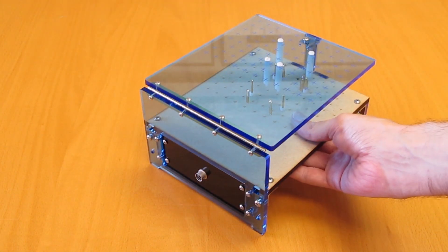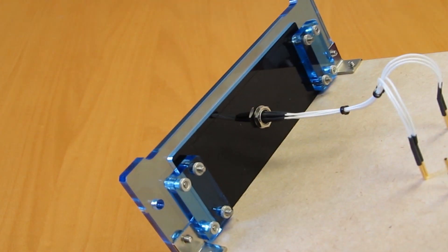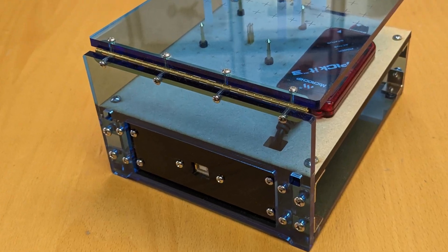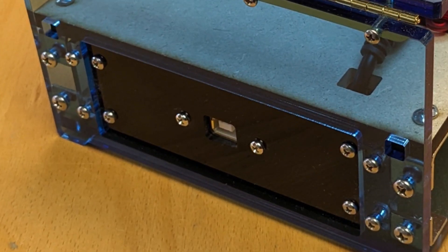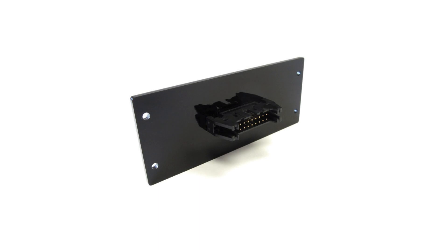Test probes are typically wired to a connector on the rear panel for connection to your external test equipment. The rear panel has a removable insert which you can machine to suit any connector. Alternatively, we have a variety of inserts pre-cut to suit common connectors.